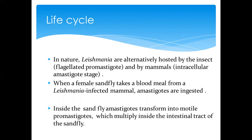Now that we've looked at the vector and the causative organisms, let's look at the life cycle. The vector is the Phlebotomus fly, or the sandfly, and the host is the human or mammalian host. In nature, Leishmania exists in insects in the form of promastigotes, and in mammalian or human hosts in the form of amastigotes. It's important to remember those two forms of Leishmania.